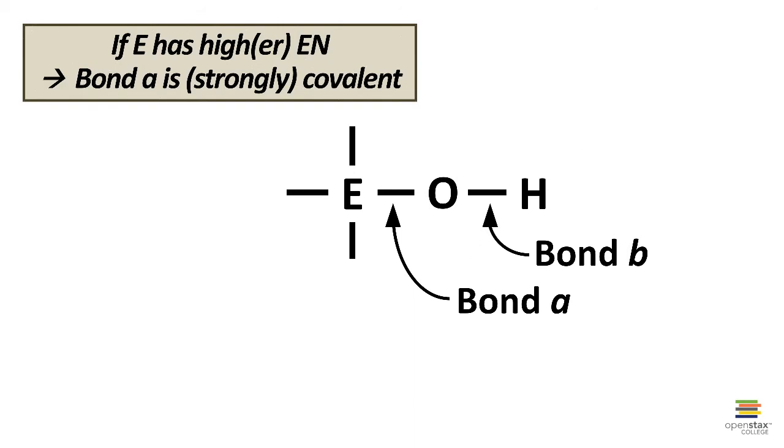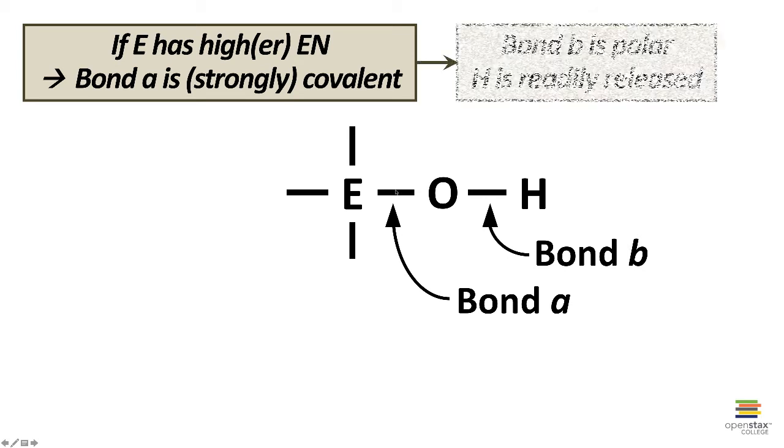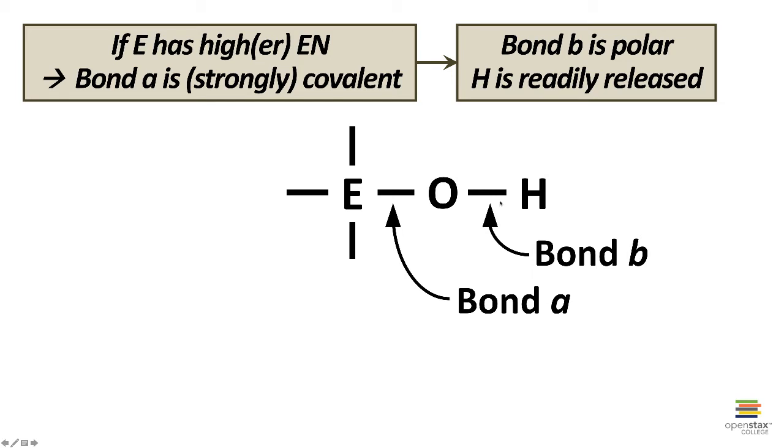And note, we actually have two distinct situations. If element E has a higher electronegativity, relatively speaking, then we're going to have a strongly covalent bond between E and O. So an example, of course, would be what we just did, Cl or Br or I. We have a covalent bond, fairly strongly covalent. And because of that, the bond B is a polar bond. Electron density is pulled this direction. And because the bond is polar, the hydrogen, or partially because the bond is polar, the hydrogen is reasonably readily released, which means we have an acid.